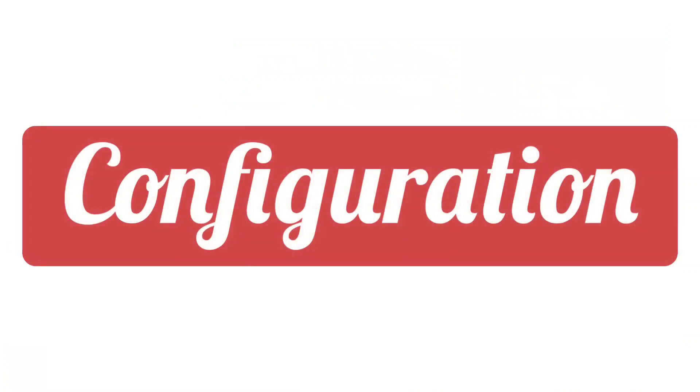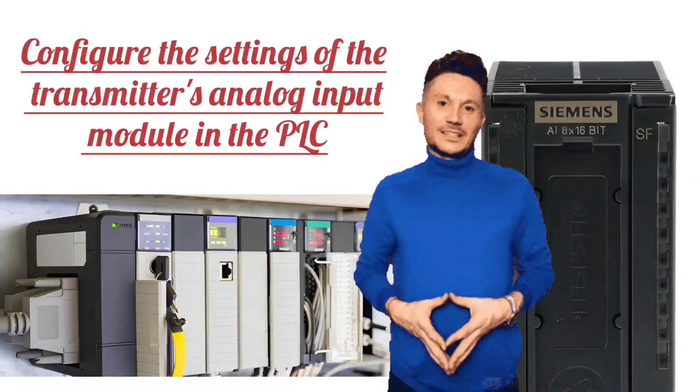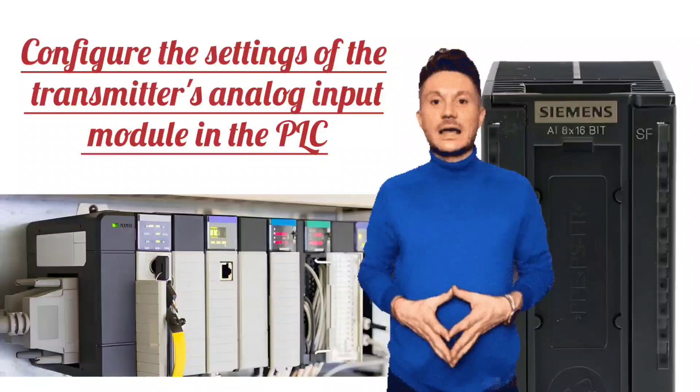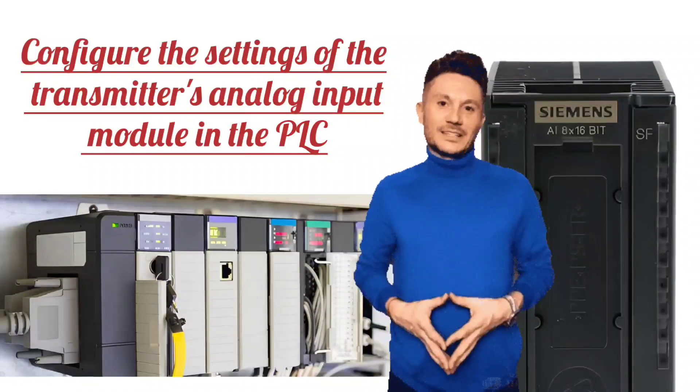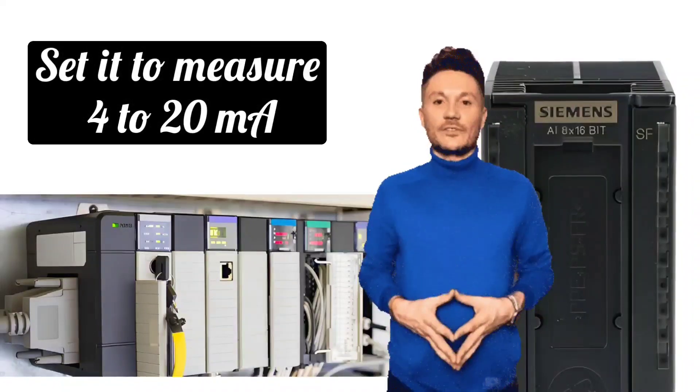Next step is configuration. Configure the settings of the transmitter's analog input module in the PLC. Set it to measure 4 to 20 milliampere pairs.